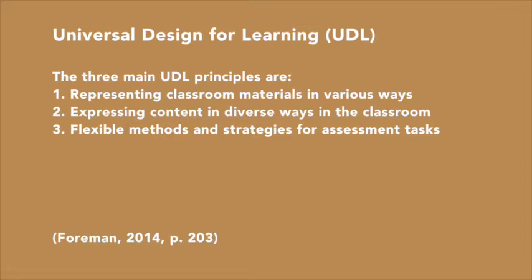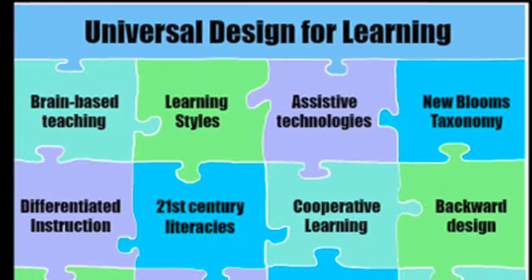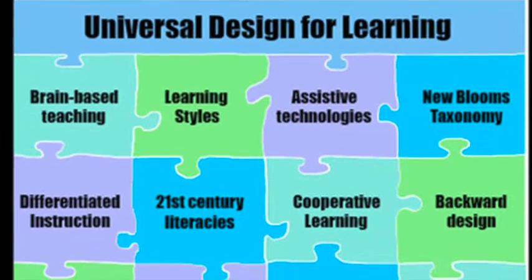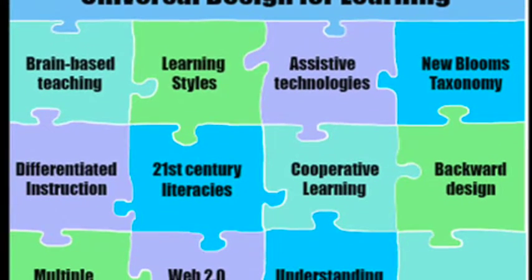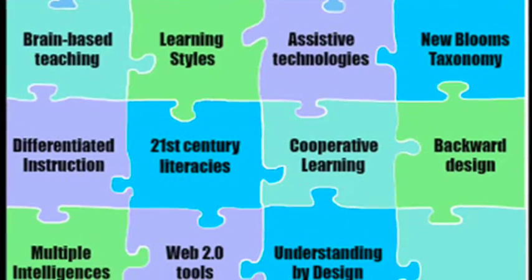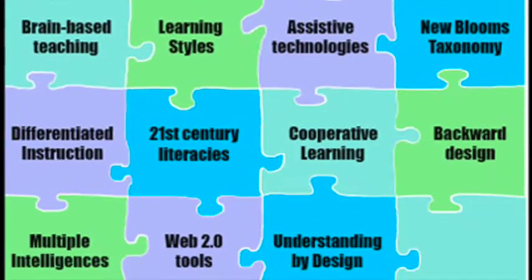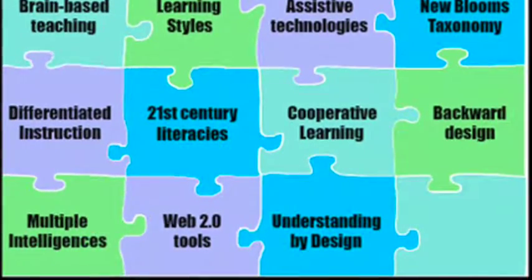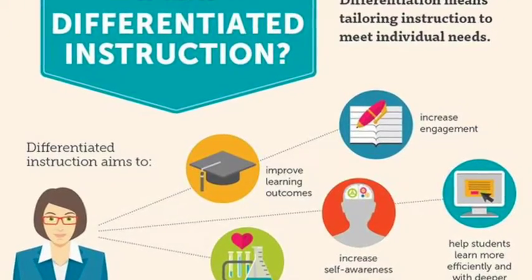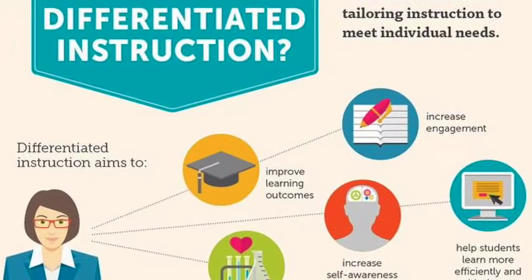The three main UDL principles that Foreman emphasises are: one, representing classroom materials in various ways; two, expressing content in diverse ways in the classroom; and three, flexible methods and strategies for assessment tasks. These principles are extremely beneficial towards modifying content, process and assessment as they facilitate curriculum modifications, meaning that the gap in educational achievement outcomes between Indigenous and non-Indigenous Australian students can improve significantly through the use of the UDL.